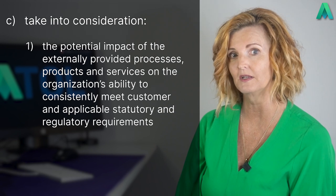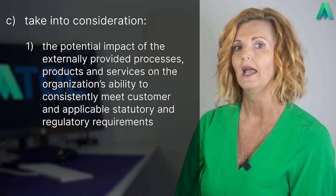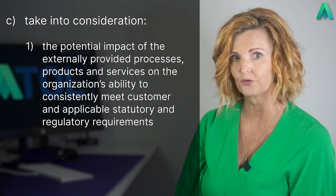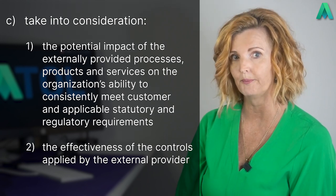The next section of the clause states: C, take into consideration — one, the potential impact of the externally provided processes, products and services on the organisation's ability to consistently meet customer and applicable statutory and regulatory requirements; and two, the effectiveness of the controls applied by the external provider. This means that the controls you have in place to ensure that your external providers are meeting your requirements and your customers' requirements will be higher for those providers who would have a higher impact on your own product or customer experience.